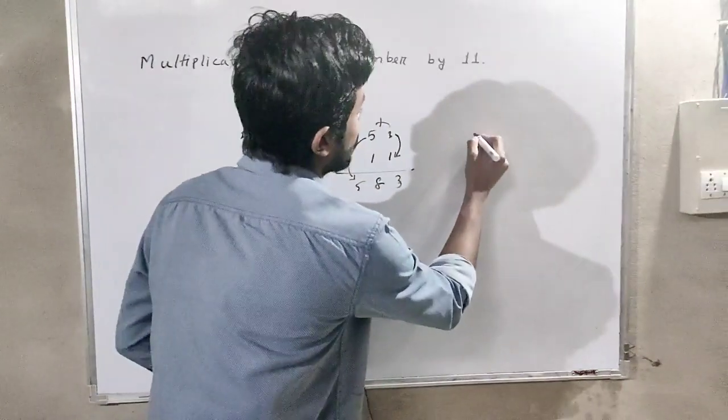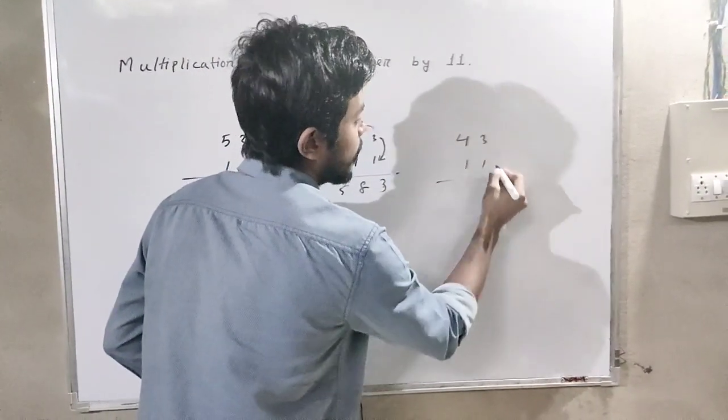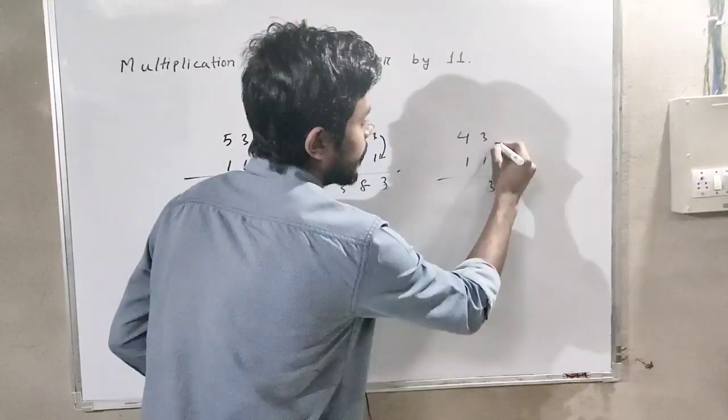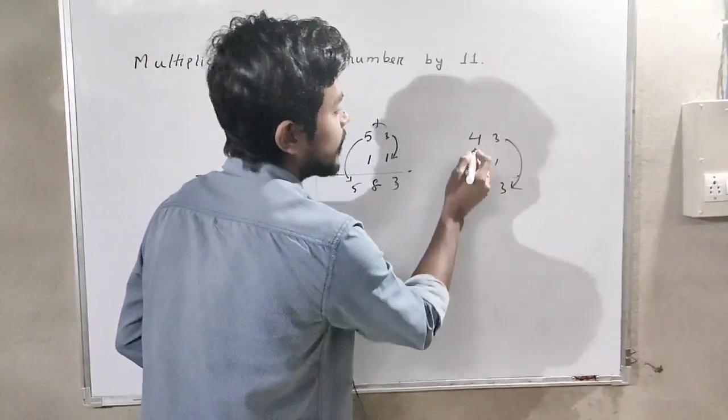Let us take another example: 43 by 11. So here 3 is placed here, 3 plus 4 is 7, and 4. The result is 473.